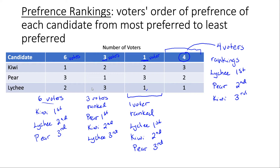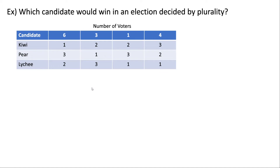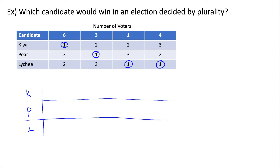Now let's talk about how to determine the winner of a plurality election using a preference ranking table. We look for each voter's or each group of voters' most preferred choice, which is whoever they ranked first — that's who they're voting for. We have six voters that ranked Kiwi first, so those six voters are all voting for Kiwi.